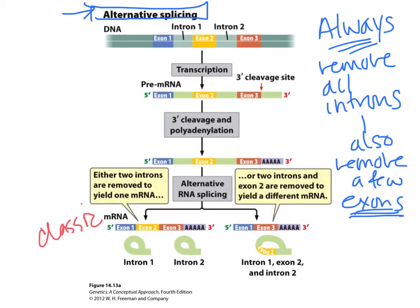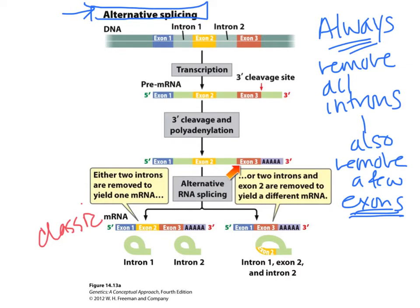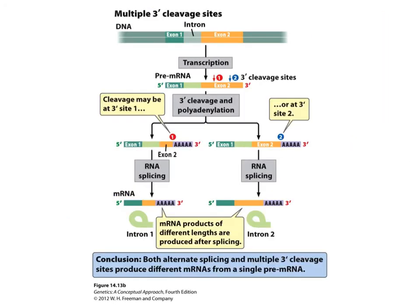Different secondary structure, tertiary structure, possible different function for the proteins — so two different mRNAs, two different proteins due to alternative splicing. Usually these are cell-type specific: this one is made in one type of cell, this one in another type of cell. In one cell type, GU-AG is used for one big splice; in another cell type, a different GU-AG pattern is used.